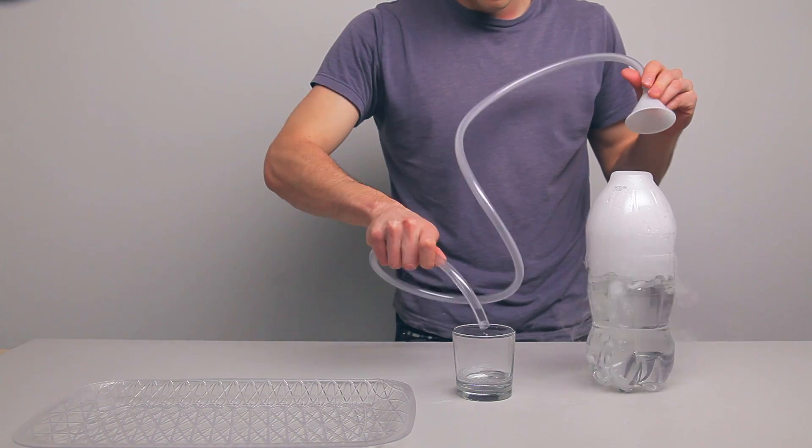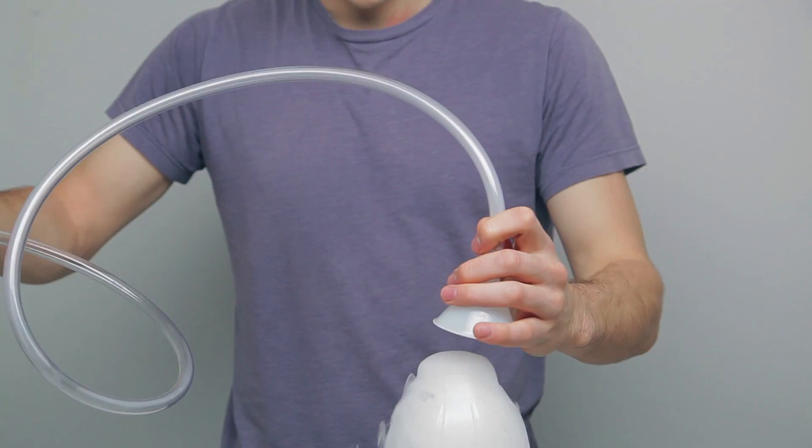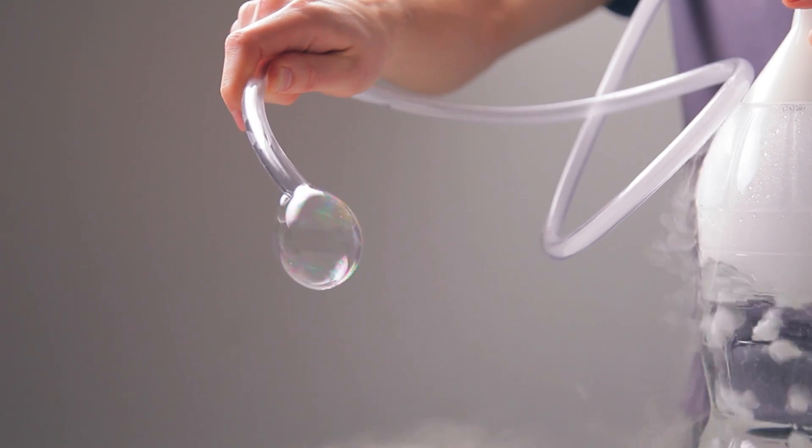Then take one end of your tube and place it in your bubble solution. Put your funnel over the 2-liter bottle and you'll see bubbles start to form.